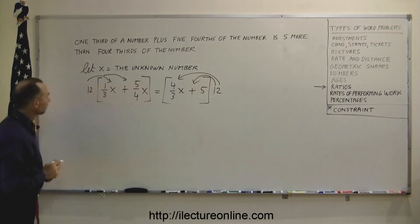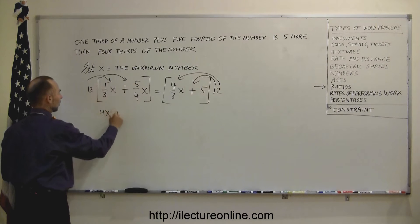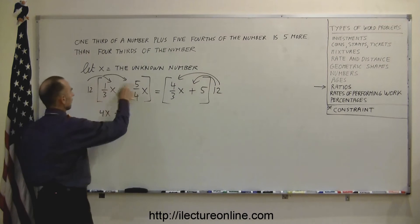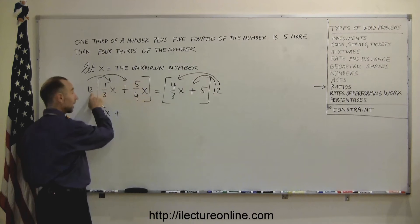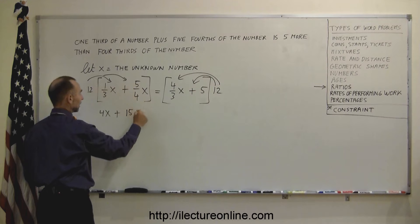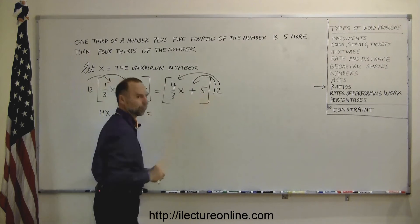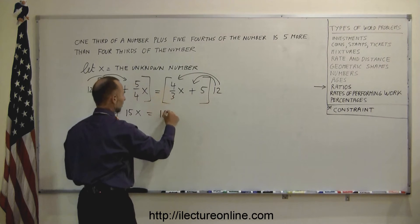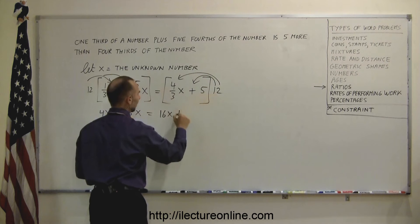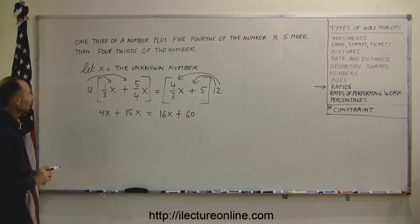So 12 times one-third x. So that means 3 goes into 12 four times, this becomes 4x. Plus, 12 times five-fourths x, while 4 goes into 12 three times. 3 times five is 15, so this becomes 15x, equals 3 goes into 12 four times. So 4 times four is 16, that becomes 16x. And 12 times five, that's 60. And there we got rid of our fractions.